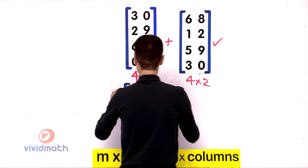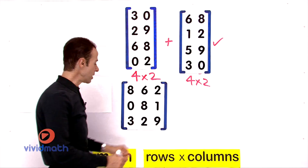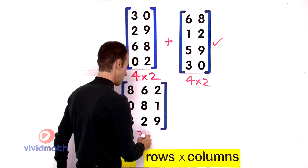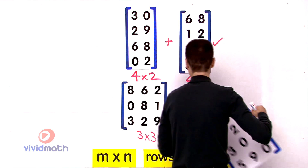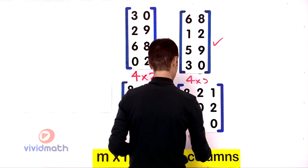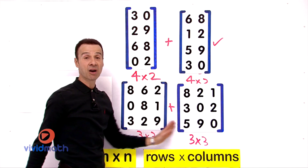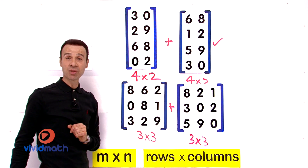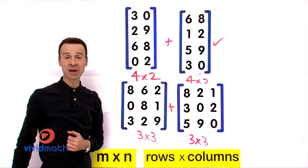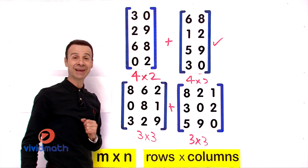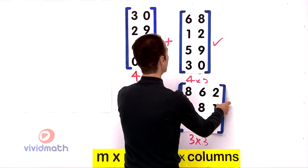Let's try another two. Can you add and subtract these? Three by three and three by three — yes, they are of the same order and same dimension, three by three. You can add them together or subtract them because they have corresponding elements.